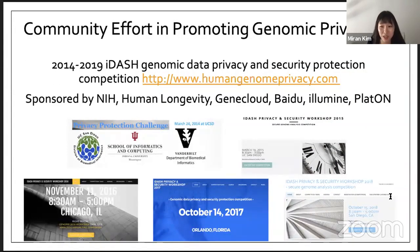There are several privacy technologies for secure computation, for example multi-party computation and differential privacy. Among them, HE can be considered as one of the promising solutions for secure computation. Our HE community have regular standardization meetings to discuss the underlying security and applications and API. As another community effort, they're having a competition to apply homomorphic encryption to biomedical challenges. It was sponsored by NIH and several companies such as Baidu, Illumina, and Platon.